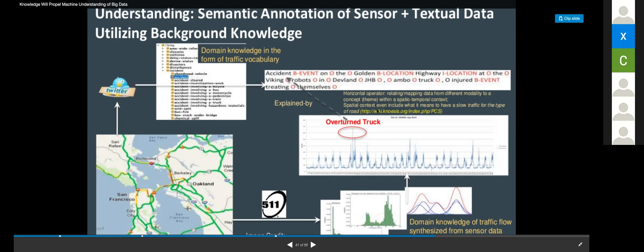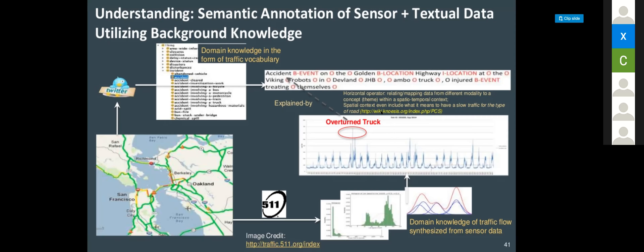If you did not have this knowledge base, entity extraction would fail and the problem becomes nearly impossible to solve. The key takeaway: you have two modalities here — the road sensor data and textual tweets. Connecting these two modalities is impossible or nearly impossible without the availability of knowledge. In this particular problem, three different knowledge pieces were used: the traffic vocabulary, one for city events, and one for location geocoding.